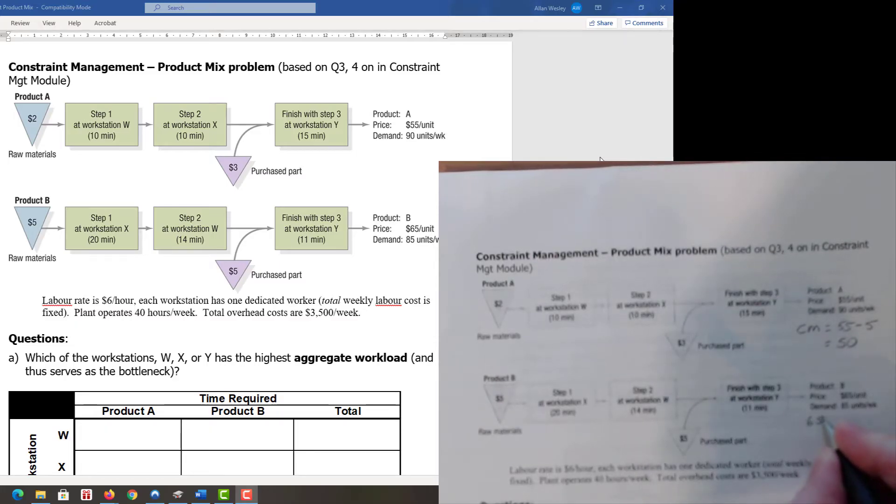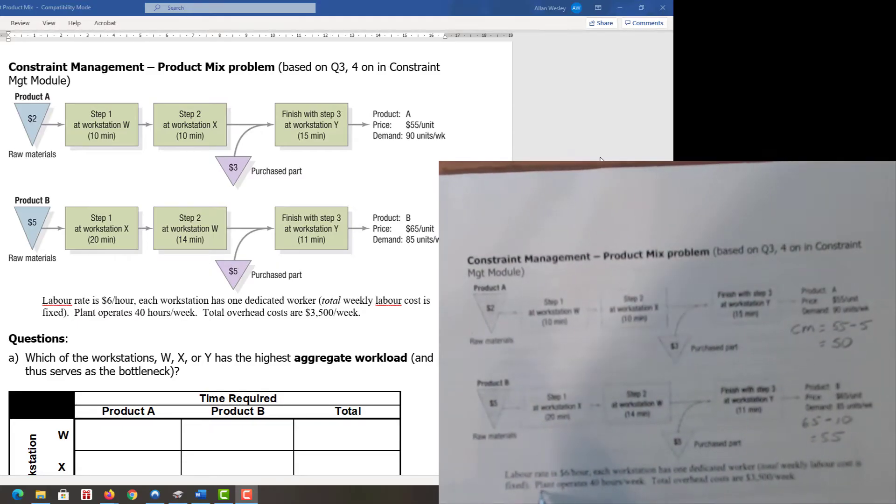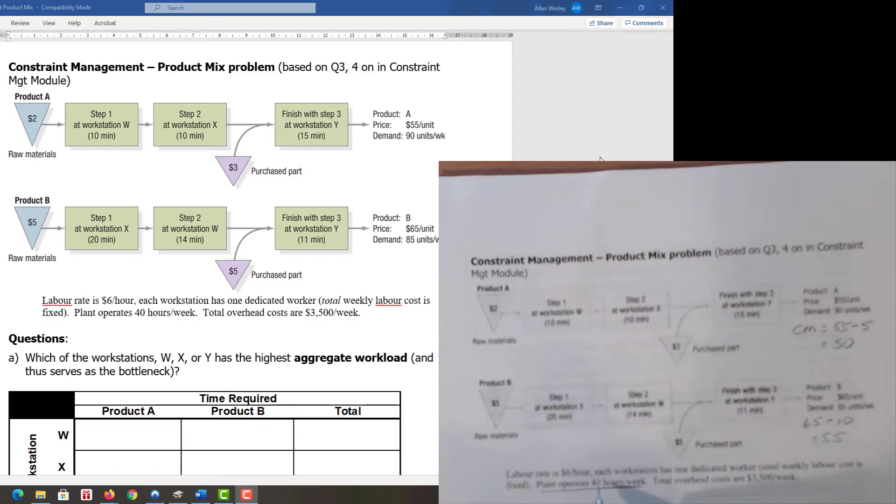For product B, it's 65 dollars minus the cost of parts which is 10, giving a contribution margin of 55 dollars. We also note that the plant operates 40 hours per week.